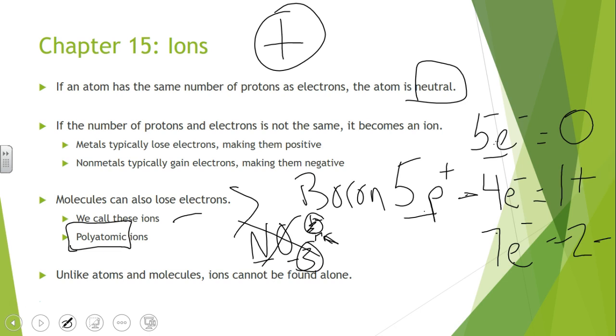If we have a positive ion, the positive ion has to be coupled with a negative ion to make these two things neutral. And so you cannot find just a pile of positive ions someplace. You cannot find a pile of negative ions someplace. Ions have to be coupled with an ion that has the opposite charge of it.